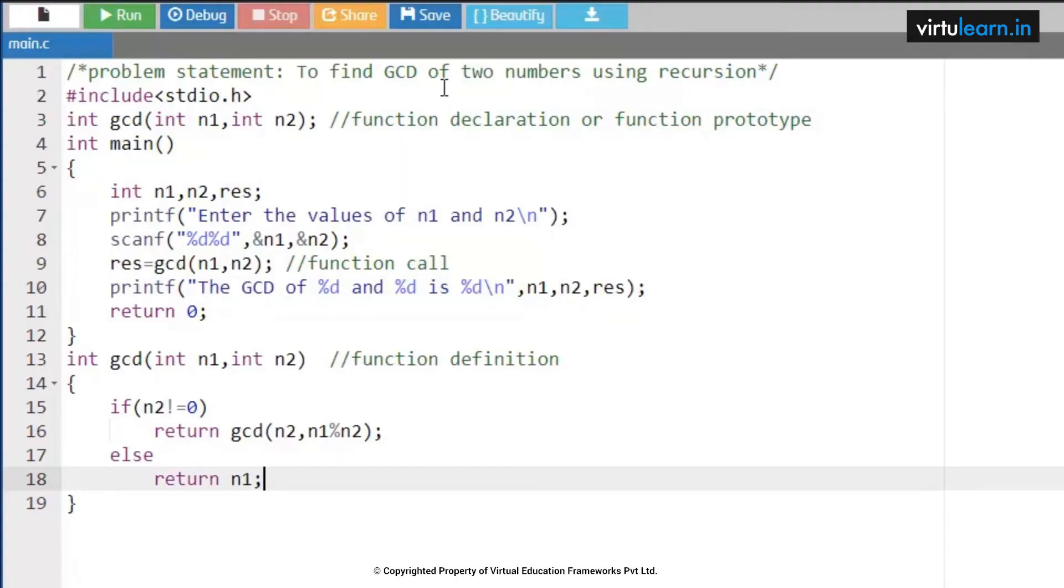The next problem statement is to find GCD of three numbers using recursion. As we are seeing three numbers here, we can use the same logic, but there is some change which I am making to this two numbers recursion program.